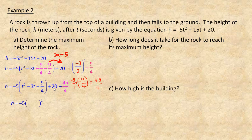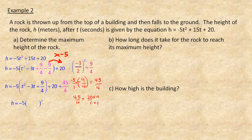We're going to add 20 and 45/4. Now 20 is the same as 20/1. To get a common denominator of 4, we multiply 20 by 4 top and bottom to get 80/4. So 45/4 plus 80/4 equals 125/4. That's what goes on the end — that's actually the h-coordinate of the vertex.